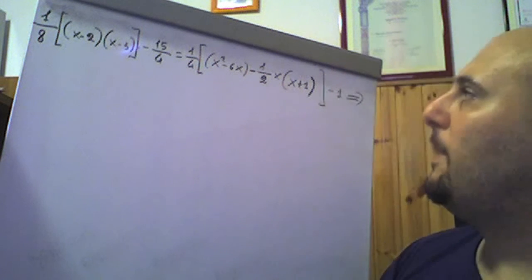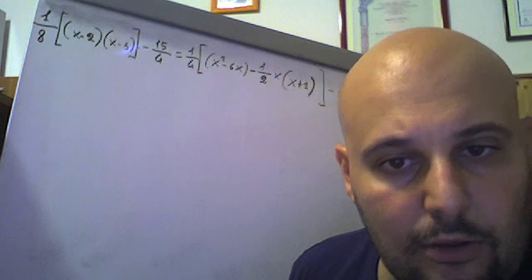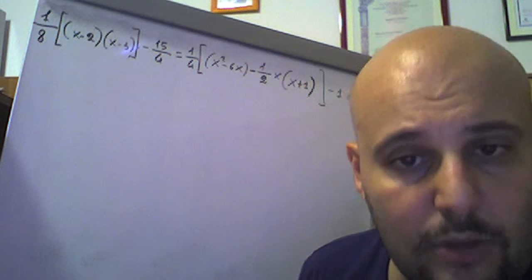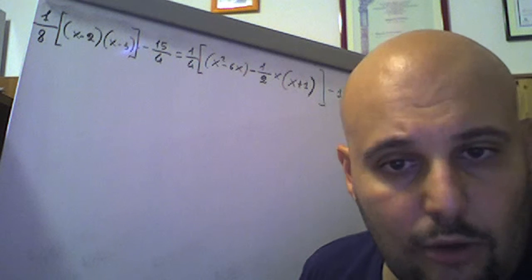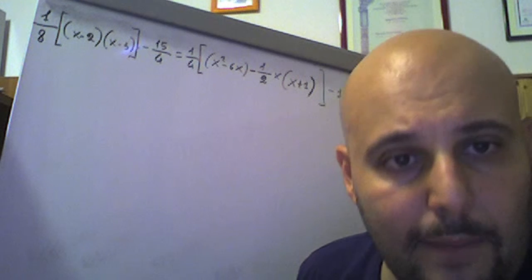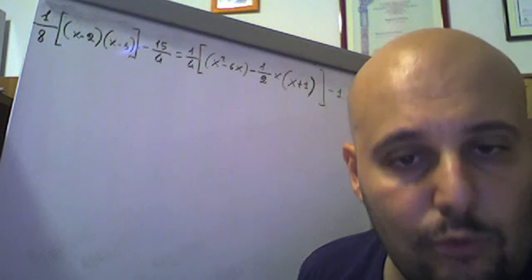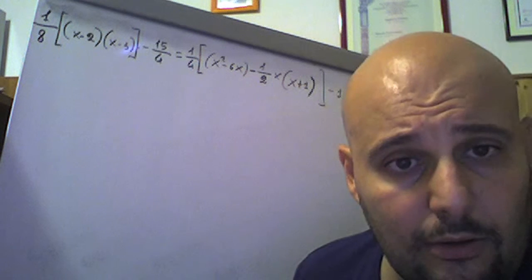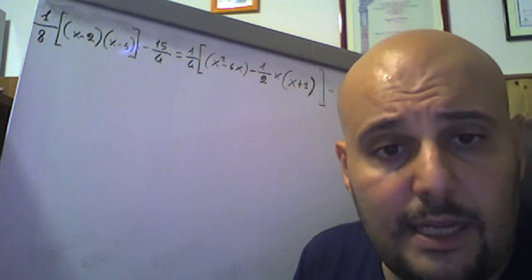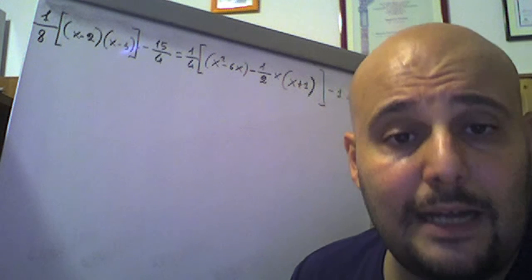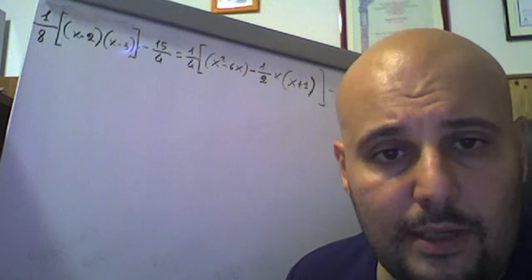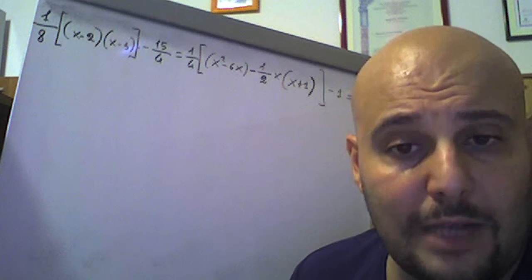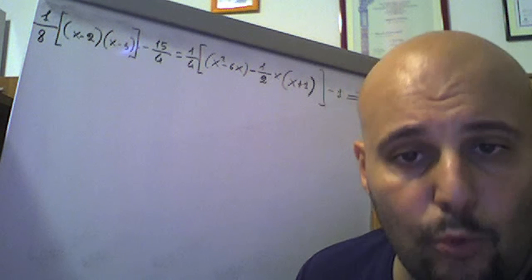Primo esercizio: un ottavo per [(x-2)(x-3)] meno 15 quarti uguale un quarto per [(x² - 6x) meno un mezzo x (x+1)] meno 1.